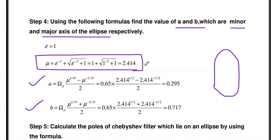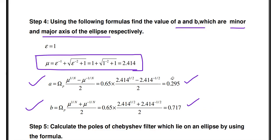After calculating mu, we substitute into the formulas for a and b. The minor axis a = ωp × (μ^(1/N) − μ^(−1/N)) / 2, and the major axis b has a plus sign instead of minus. Substituting the passband frequency Ωp = 0.65 and μ = 2.414 with N = 2, we get a = 0.295 and b = 0.717. Note that a (minor axis) is always less than b (major axis).